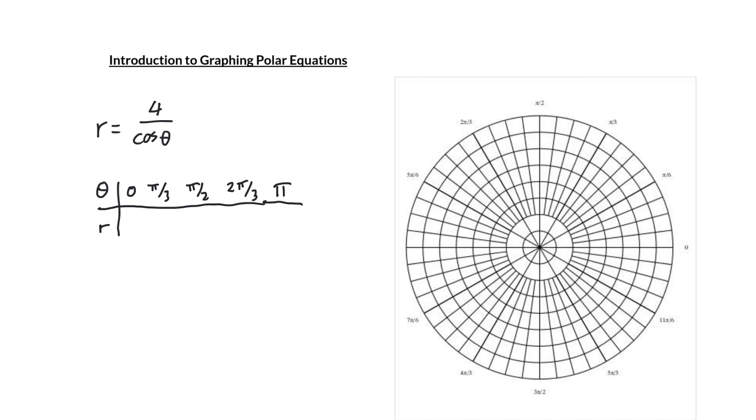And I'll plug these values in and start thinking about values of r come back out. When theta is 0, cosine of 0 is 1, and 4 divided by 1 is 4. When theta is pi over 3, cosine of pi over 3 is 1 half, and 4 divided by 1 half would be 8.